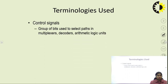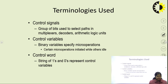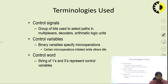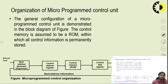Some terminologies to understand before studying the sequencer: control signal variables and control word. The control word is the binary stream of 0s and 1s. Control signals can be of three types: high impedance state, 0, and 1. If the control signal is 1, the micro program is going to execute; if 0, it will not execute.